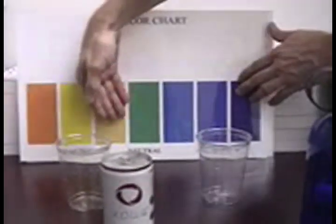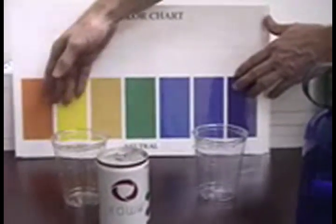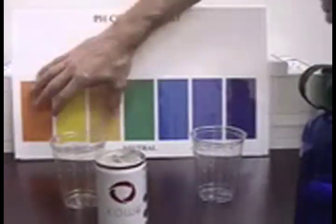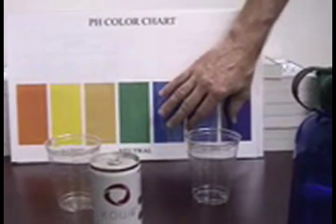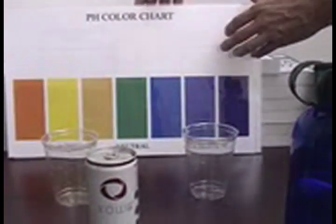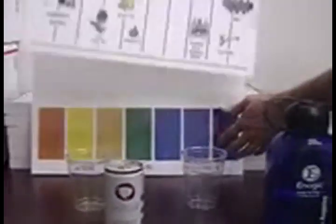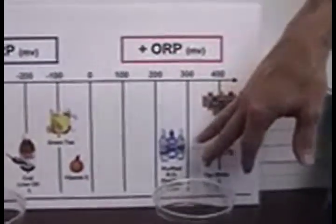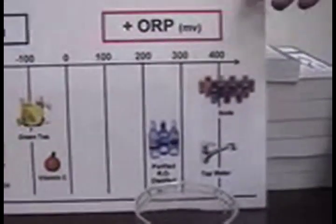But when we're drinking something on the acidic side, that leads to chronic illnesses. Illnesses thrive in this environment, acidic. Health thrives in this environment, alkaline. The same thing is true for antioxidants. You want to be flooding your body with antioxidants, not oxidizing properties. All bottled water, bottled drinks are oxidant heavy. In other words, free radicals.